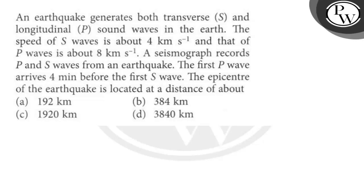The speed of S waves is about 4 km per second and that of P waves is about 8 km per second. A seismograph records P and S waves from an earthquake. The first P wave arrives 4 minutes before the first S wave. The epicenter of the earthquake is located at a distance of about...